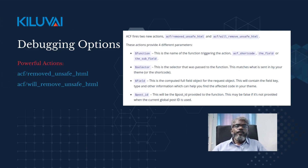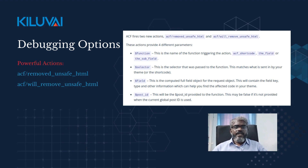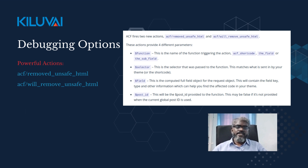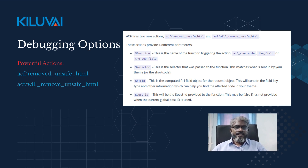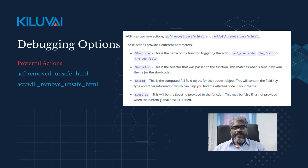To help you pinpoint where the modification occurs, ACF introduces two powerful actions: remove_unsafe_html and will_remove_unsafe_html. These actions provide useful parameters like function, selector, field, and post ID. You can leverage these for debugging, even using tools like debug_print_backtrace or xdebug break.